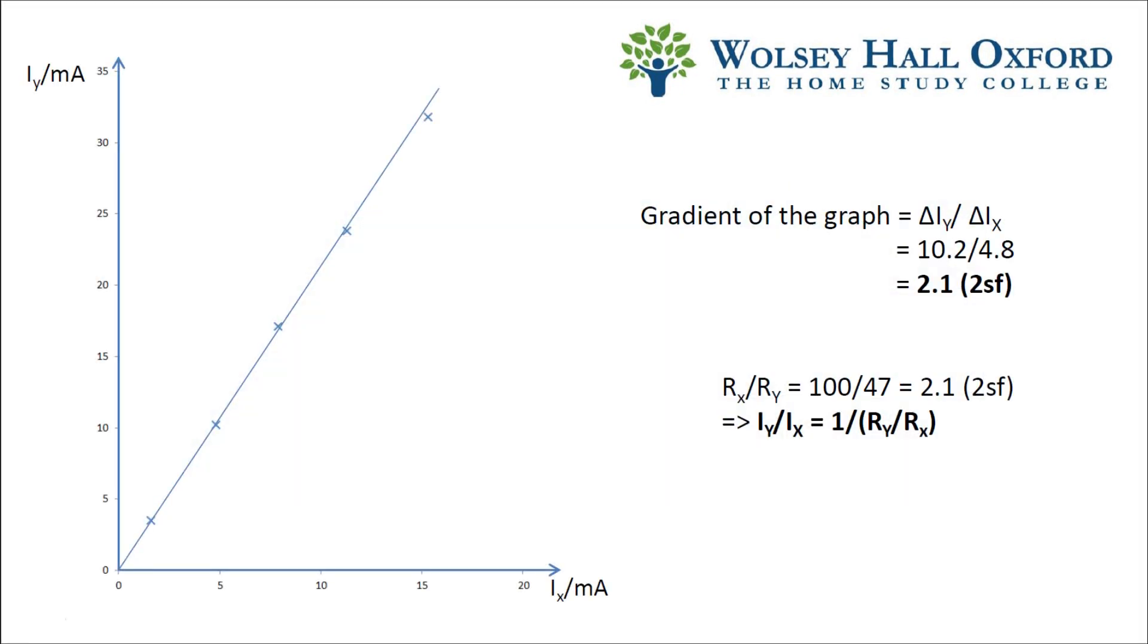Another interesting observation is how the current is shared. This plot of IY against IX shows that it's always shared in the same proportion. The ratio of IY and IX is approximately 2.1. This is the reciprocal of the ratio of the resistance values.